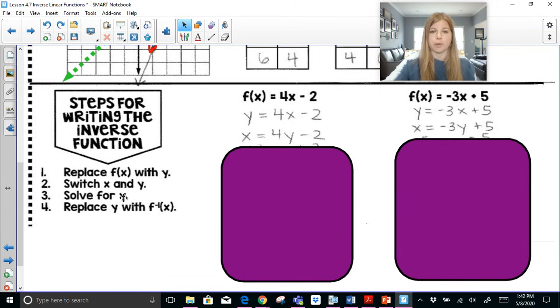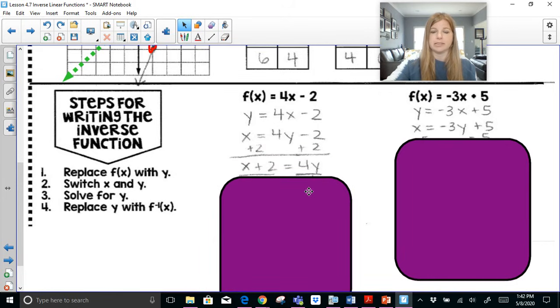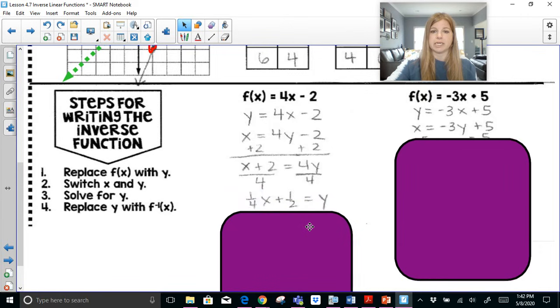Now I'm going to solve for y. So solve for y means to get y by itself. If I wanted to get this y by itself, I would need to add 2 on both sides and then divide both sides by 4.